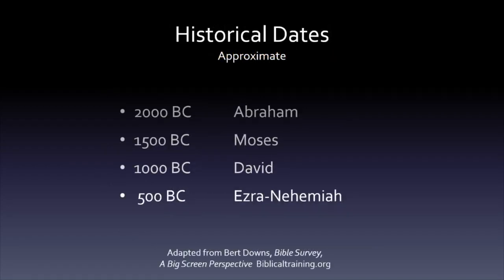To tell the story of Nehemiah, we might go back 1,500 years to the man Abraham. God had promised to make him the father of a great nation, the nation of Israel. To Moses, God promised to establish the Israelites in a land of their own. And later he told the Israelite king David that there would be a lasting kingdom ruled by one of David's descendants.